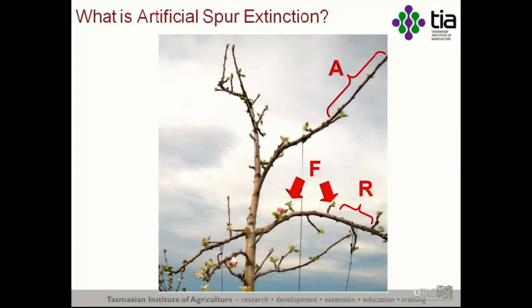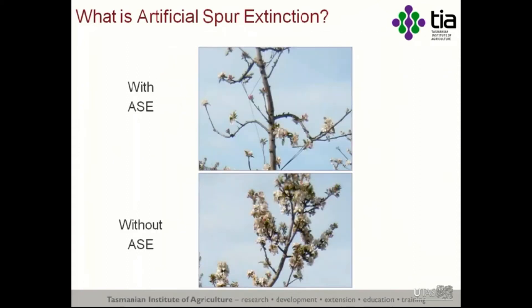Axillary buds are removed completely apart from a few that we leave for subsequent replacement growth if necessary. We end up with a situation where a tree that has undergone spur extinction looks quite a lot less dense than a conventional tree.